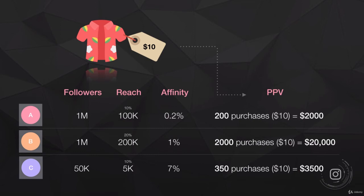Account B has the same million followers but an increased reach of 20%, so the post reaches two hundred thousand people. Inside this course we teach you how to increase not only followers but reach and affinity. Their affinity is also much higher at 1% — still pretty low — but that means two thousand purchases at ten dollars each, which is twenty thousand dollars. They've made ten times more profit just by focusing on reach and affinity, not just followers.